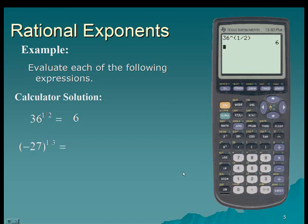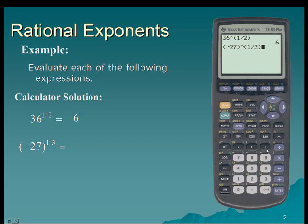In the next example, negative 27 quantity raised to the 1-third power. I'll use a begin set of parentheses, enter negative 27, raise it to the 1-third power with the fraction encased in parentheses, for a result of negative 3.